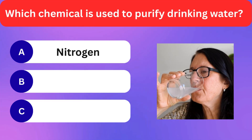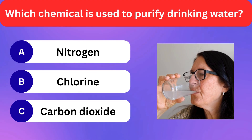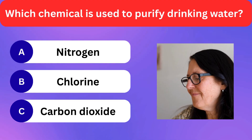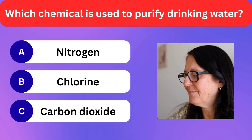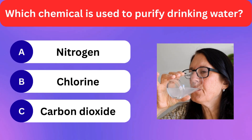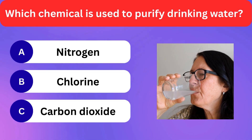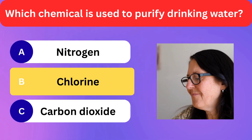Which chemical is used to purify drinking water? Nitrogen, Chlorine, Carbon dioxide. Correct answer is chlorine.